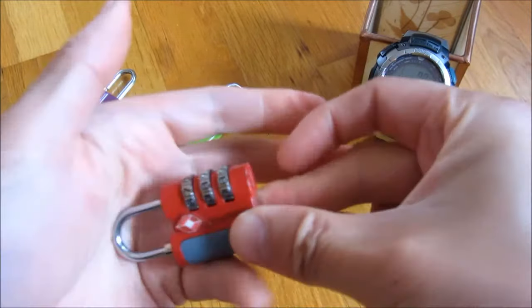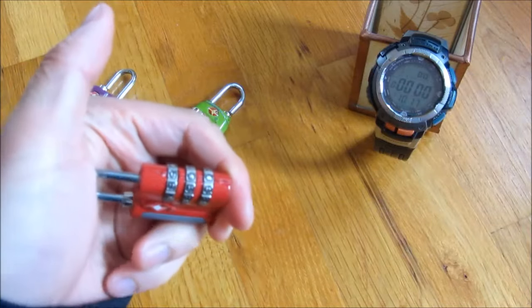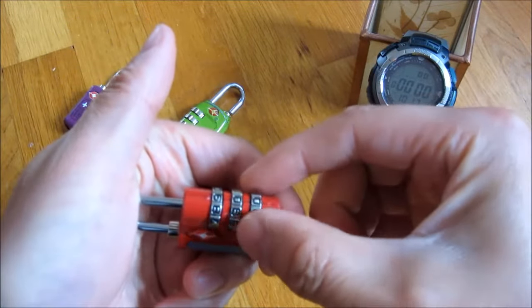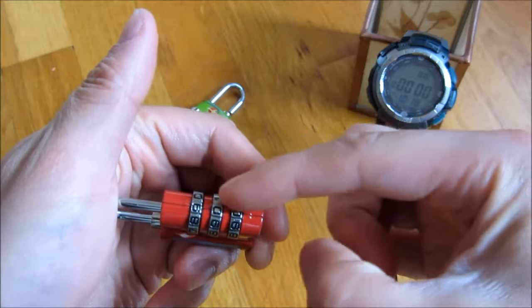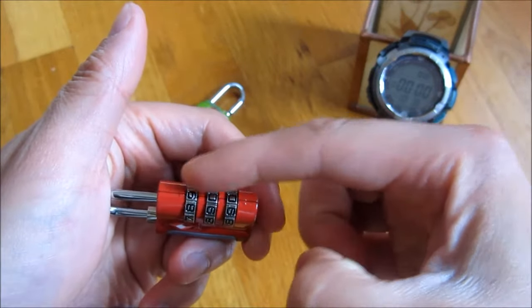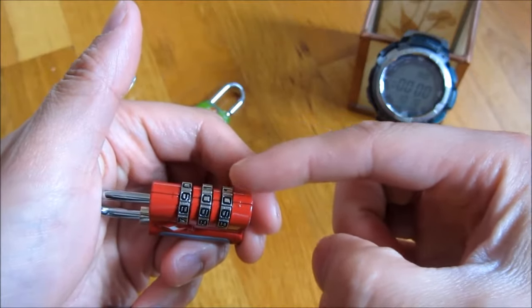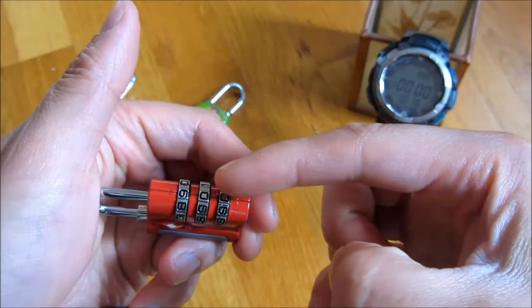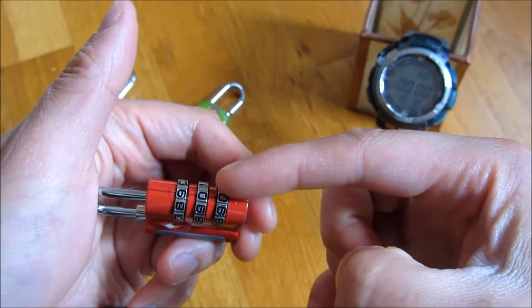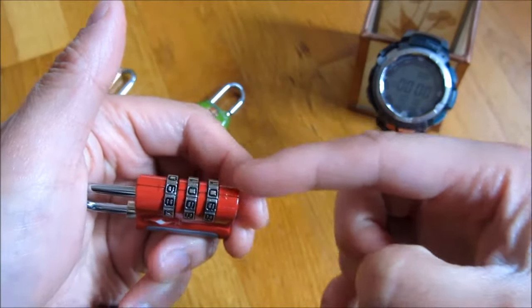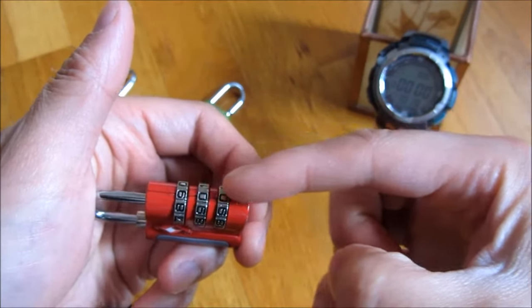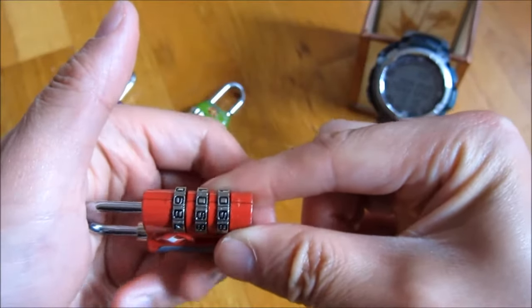So what I'm going to do is I'm going to hold the lock like this, and I'm going to try every combination by switching from the bottom one, going from 0-0-0 through 0-0-1, 0-0-2, 0-0-3, all the way to 0-0-9, and then going 0-1-0, 0-1-1, 0-1-2, 0-1-3, all the way up to 9-9-8, 9-9-9, and trying every combination.